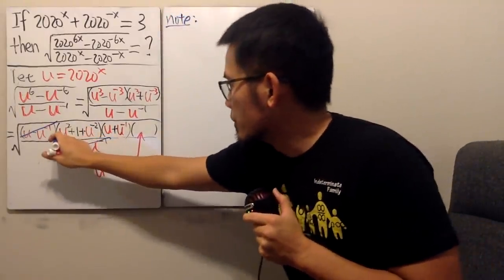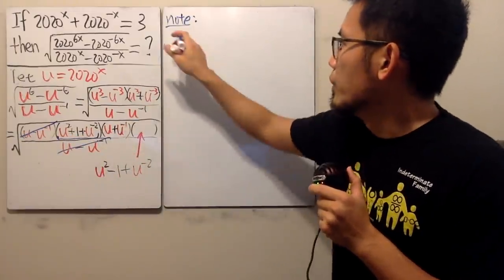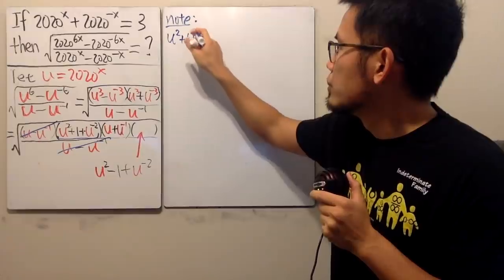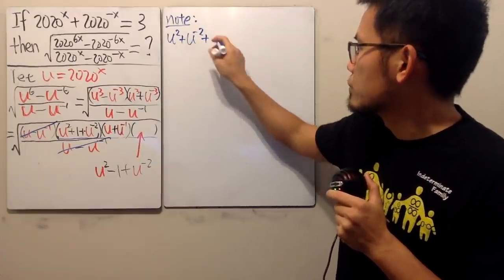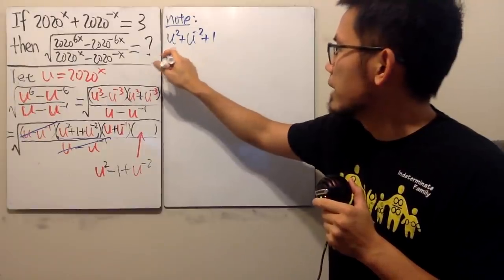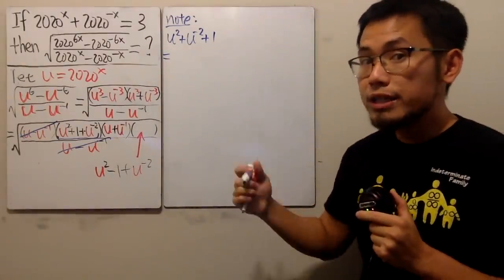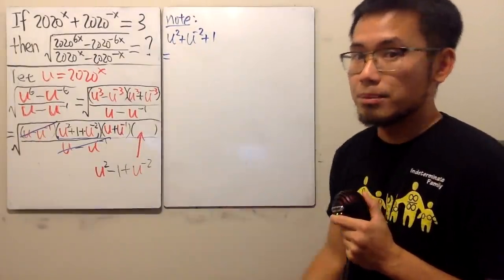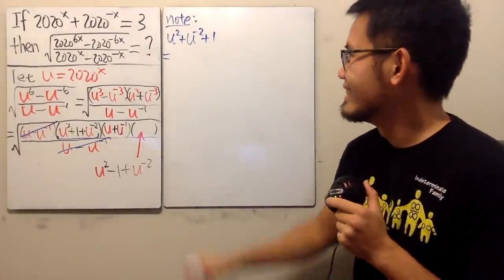Note, right here, so I'll just put this down in blue for you guys. When we have u squared plus, let me write this down first, which is u to the negative two, and then plus one. This right here, it's actually the same as saying, we can actually complete a square with the first two terms, because it does look like a perfect square, almost.